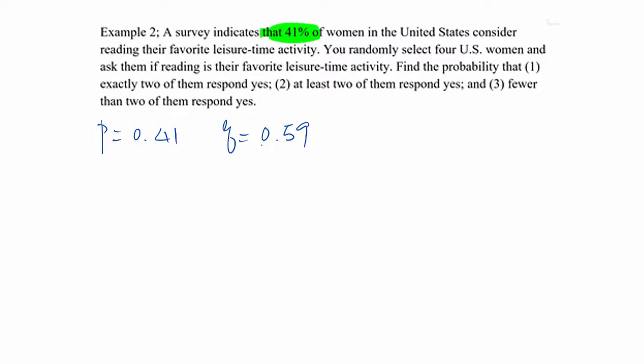Now in the sentence, you will be given the total number of cases. So you randomly select four U.S. women, which means n equals 4 here.